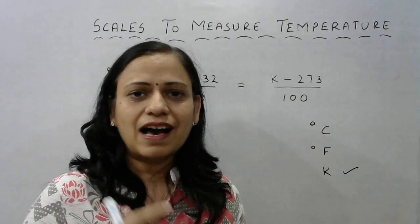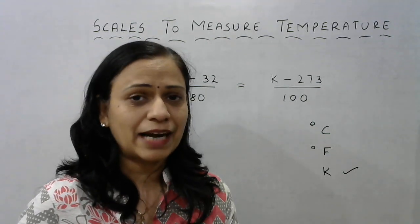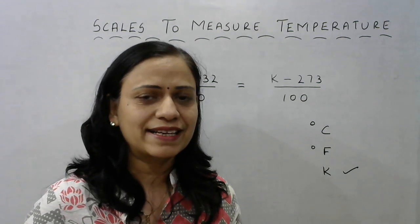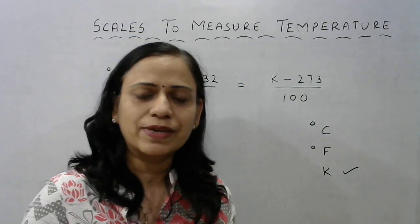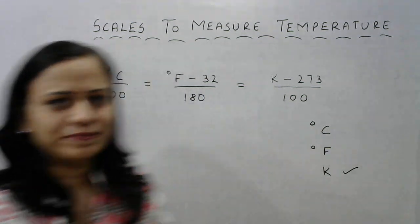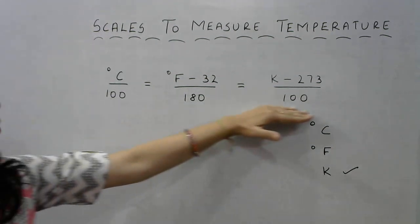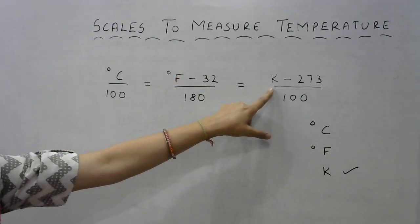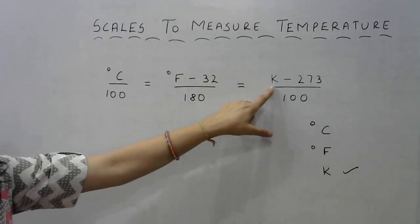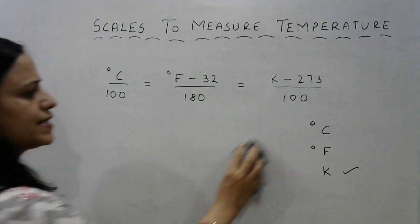Now let us learn how to convert these scales from one form to another. That means if you are given a temperature in degree Celsius, can you convert it to Fahrenheit or can you convert it to Kelvin and vice versa? So let's begin with the relation on the screen. This is the formula that we use for converting Celsius to Fahrenheit, Fahrenheit to Kelvin, or directly Celsius to Kelvin or vice versa. Using this formula you can convert any of the scales into any of the other scales.